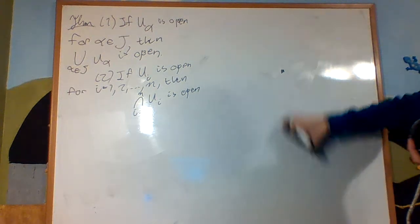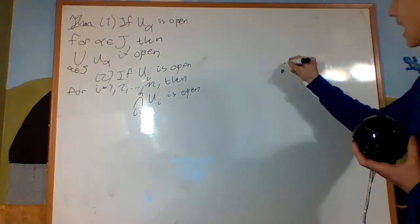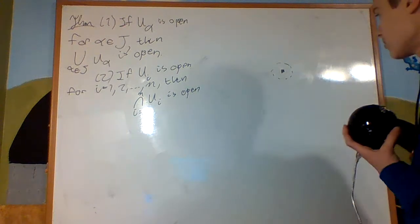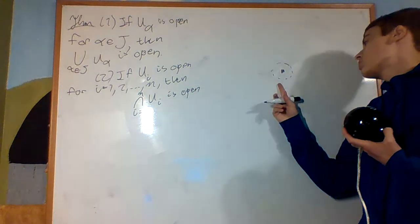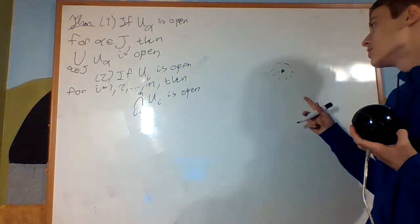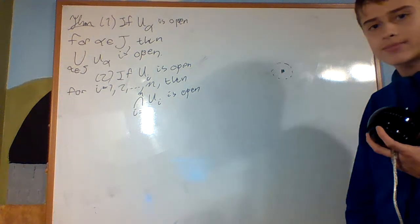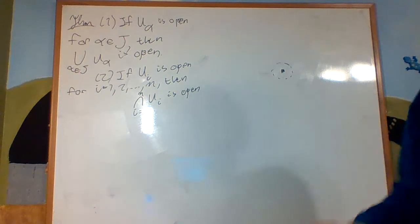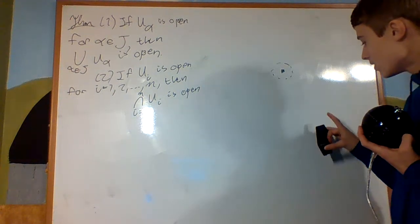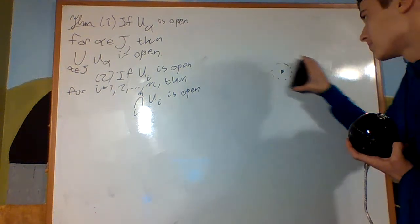Now, why isn't the single point set open? Well, because any open interval I create around it, it's not going to be completely contained inside that single point. Because there's, for every epsilon bigger than zero, it contains some other point.